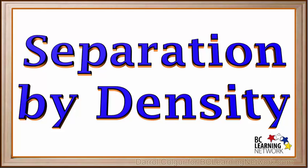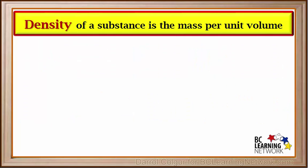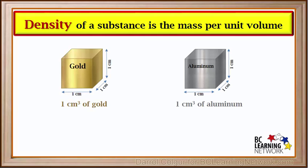Certain mixtures can be separated using the fact that substances making up the mixture have different densities. The density of a substance is its mass per unit volume. Here we have one cubic centimeter of gold and one cubic centimeter of aluminum. One cubic centimeter is how much space each cube takes up, or its volume.